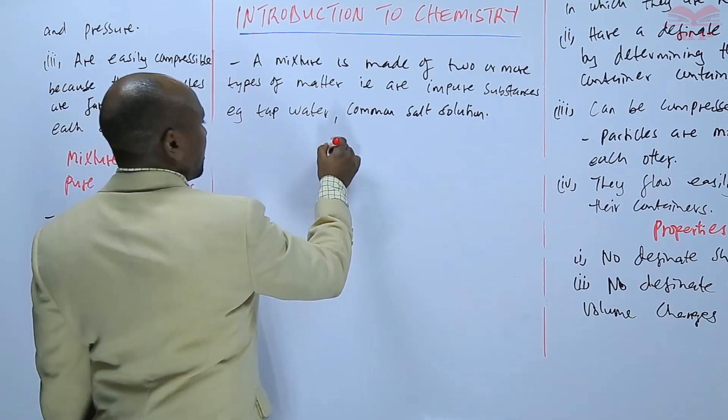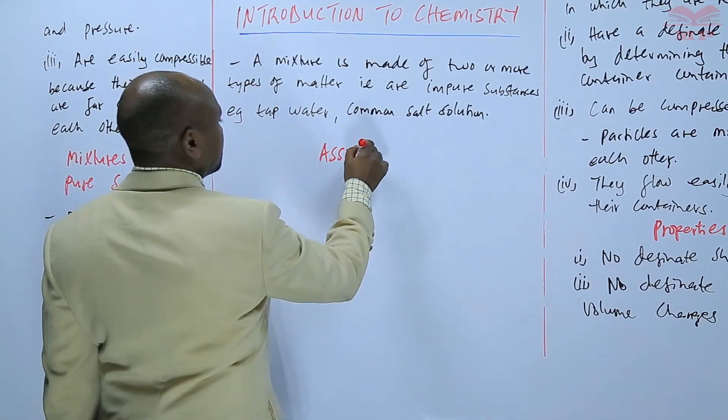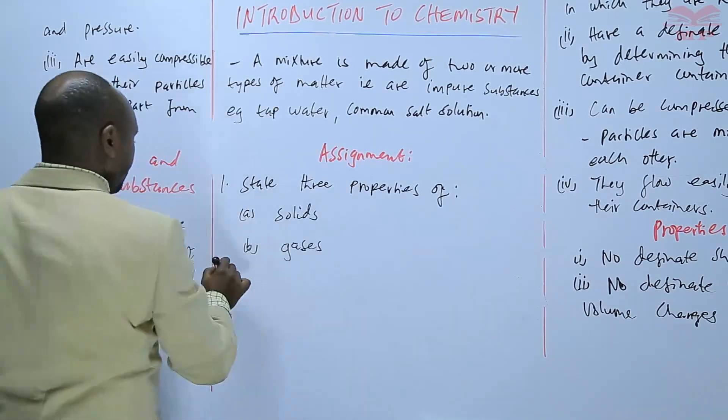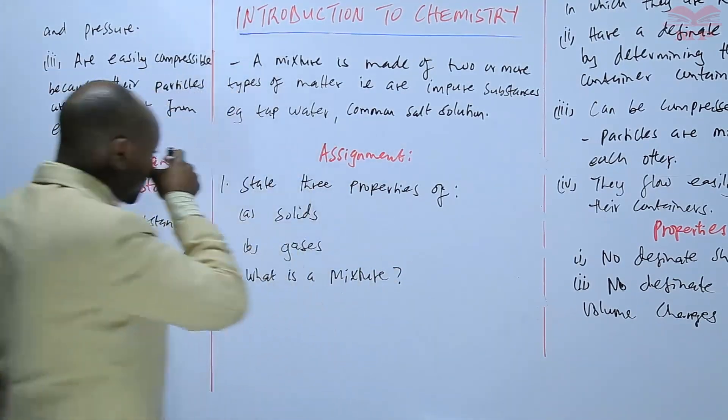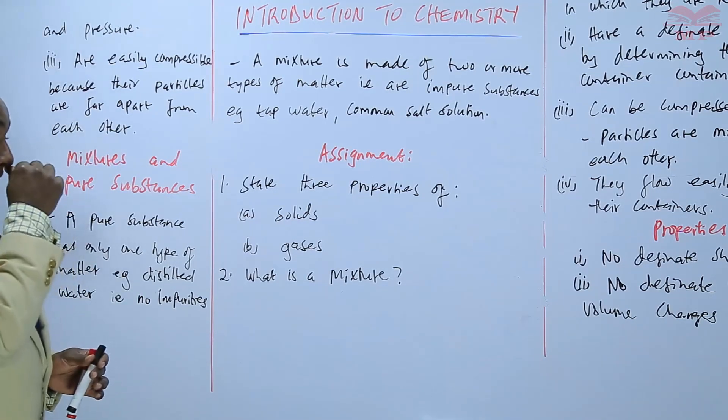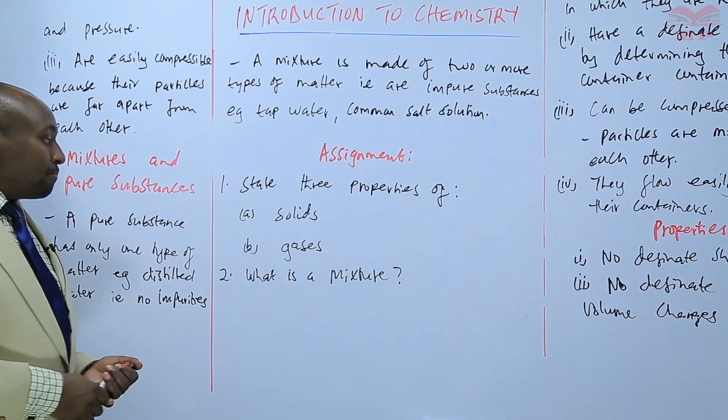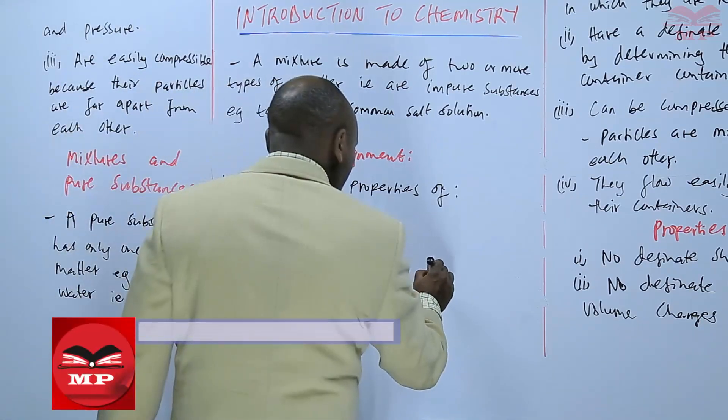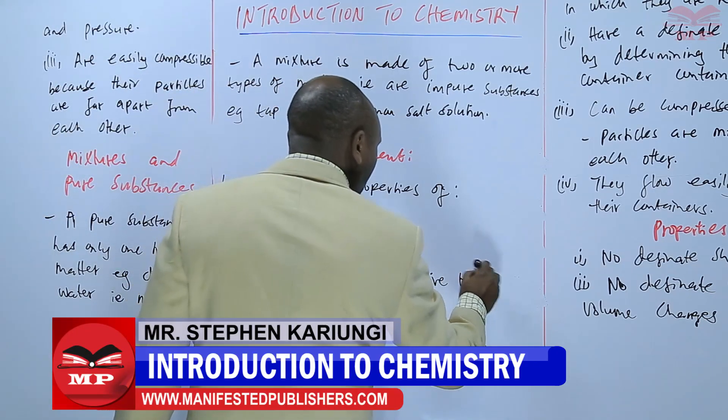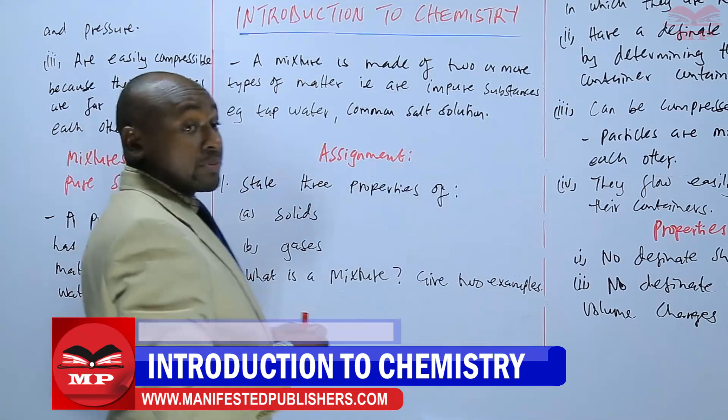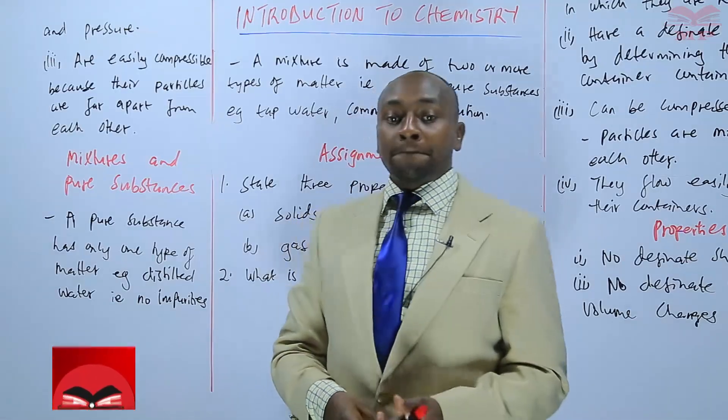So we'll have an assignment based on what we have learned. The first question: state three properties of (a) solids, (b) gases. And then number two: what is a mixture? And on these give two examples. So we'll stop there for today, we'll continue next time. Goodbye.